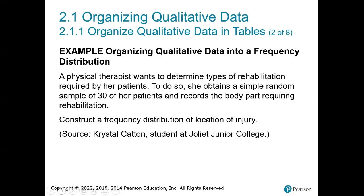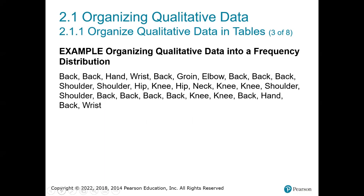Let's look at this example. A physical therapist wants to determine the types of rehabilitation required by her patients. To do so, she obtains a simple random sample of 30 of her patients and records the body part requiring rehab. We need to construct a frequency distribution of the location of injury.